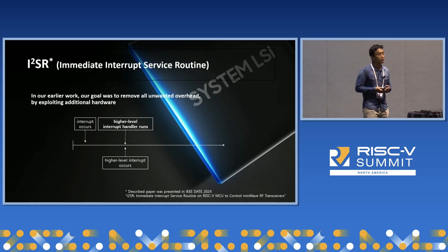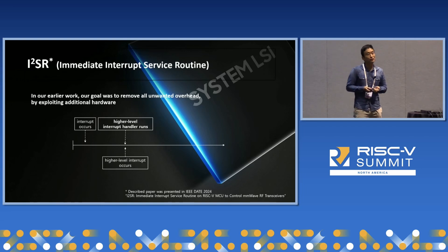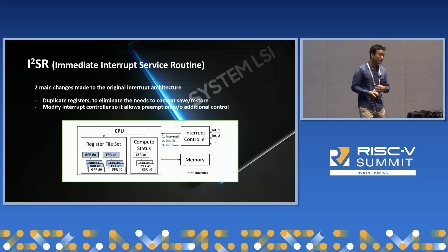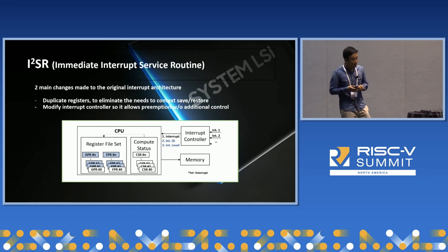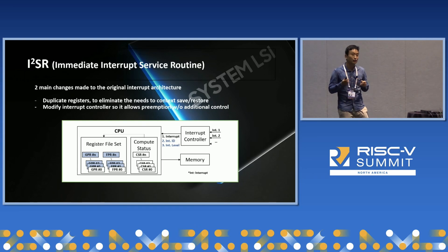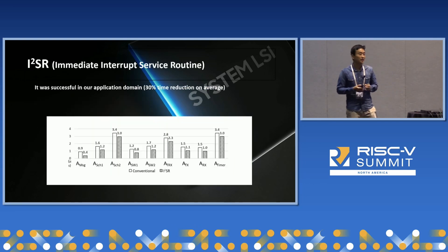With very critical timing requirements, we didn't want this to happen, so we wanted to customize our cores using additional hardware. We wanted higher-level interrupts to be able to immediately begin their actual control task when the interrupt comes in, which we call the Immediate Interrupt Service Routine. This was also presented earlier this year at the IEEE Design Automation Conference. We do this by making two major changes: first, we duplicated most of the registers including the general-purpose registers as well as the control status registers, which eliminates the need to save and restore the previous context. We modified the interrupt control mechanism so that it natively supports hardware preemption without having to additionally configure any registers in software. This approach turned out to be pretty successful — we saw about 30% reduction in total control time in our devices, measured in silicon.